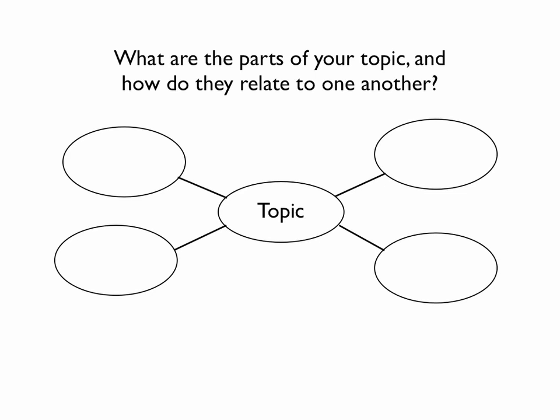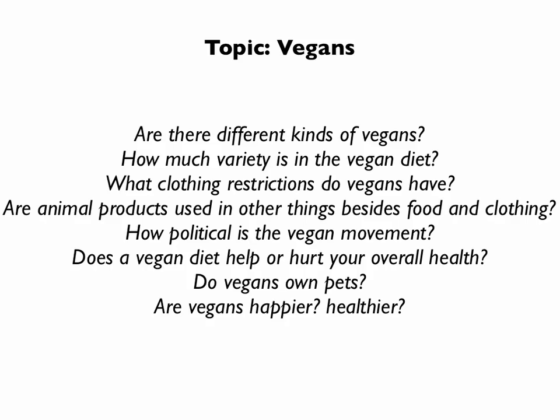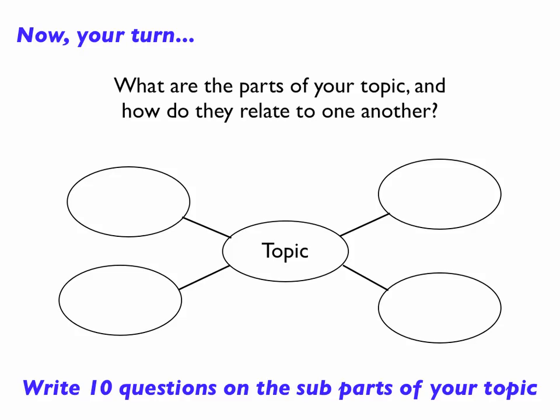First, think about what are the parts of your topic and how do they relate to one another. If your topic were the title of a book, what would its chapters be? So if my topic were veganism, for example, I might break that down into food, politics, people, and health, then write questions about all those subtopics of my larger topic, such as these. Now do this for your own topic — what are the parts of your topic and how do they relate to one another? Write at least 10 questions on the sub-parts of your topic.